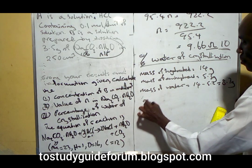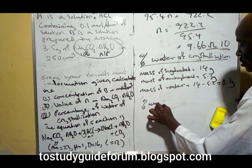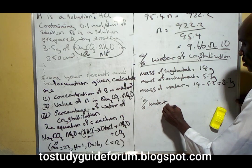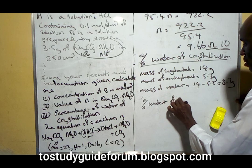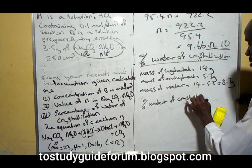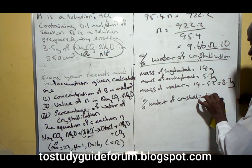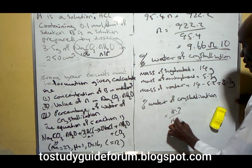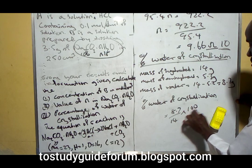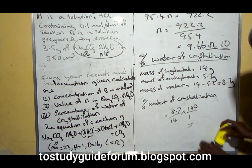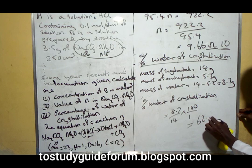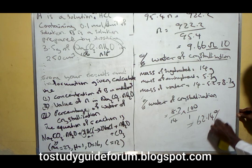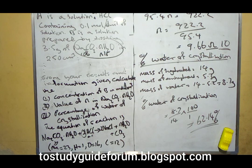Percentage water of crystallization equals 8.7 over 14 times 100. That gives us 62.14 percent. That's the last answer.